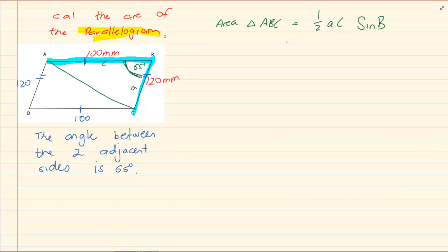Now it is a matter of substitution. So I have half. My A is 120. Remember I am taking opposite this angle. So I have 120. And then my C, remember I am taking opposite this angle.